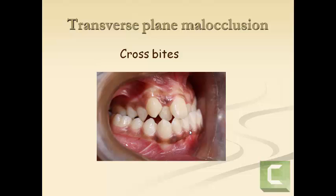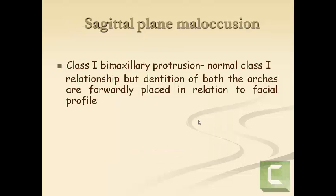In class 1 malocclusion, you can also have a malocclusion in the transverse plane — that is, a crossbite, either a posterior crossbite, anterior crossbite, or both. These were the various types of malpositions in class 1.